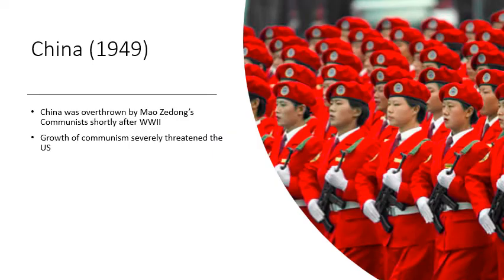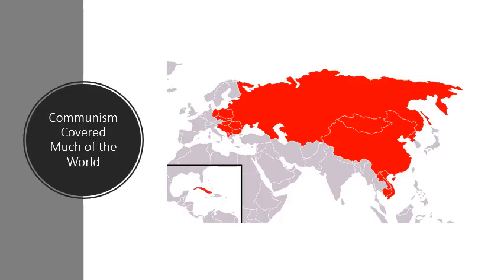Also in 1949, there is another large blow to the idea of containment — the Chinese nationalist government is overthrown by Mao Zedong's communists. This is the growth of communism. It isn't just the Soviet Union and Eastern Europe anymore — now China, that huge country, is a communist state. The United States sees the idea of containment failing. Communism covered much of the world — from Eastern Europe all the way through China — and the fear is that this worldwide revolution will continue to spread and overthrow capitalist governments.